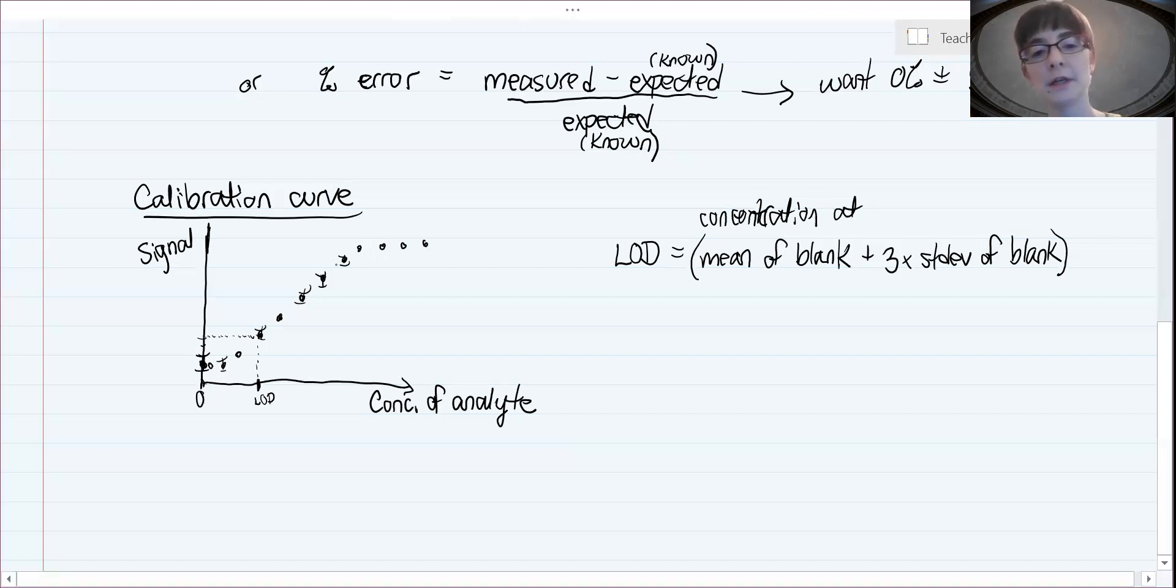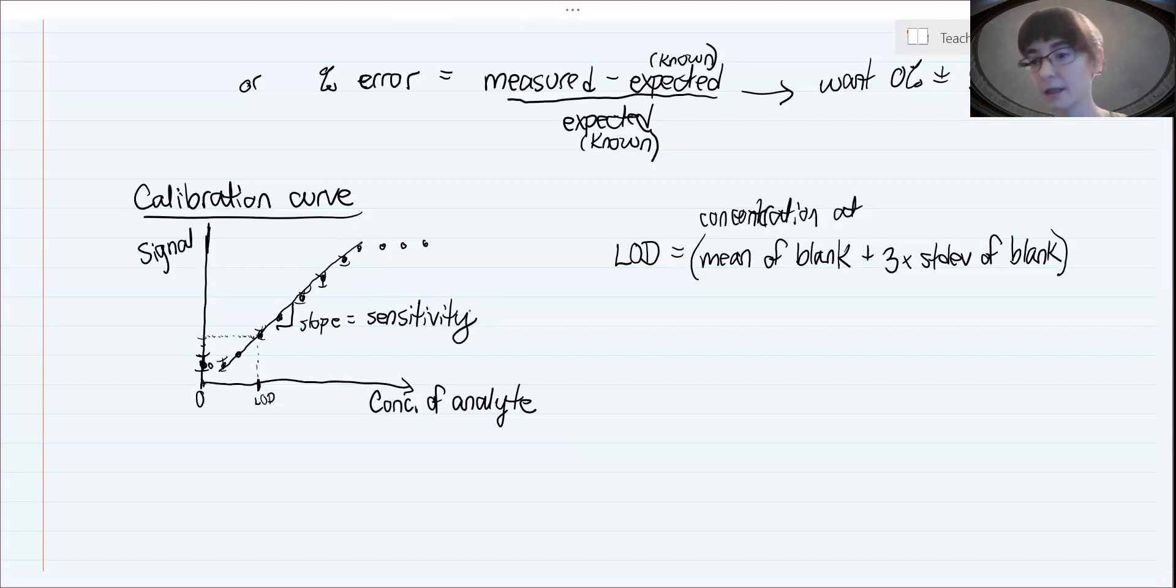Another one is what we call sensitivity, which is the slope of the linear fit of the linear part of the calibration curve. The slope we call sensitivity. That basically tells you how much change in signal do you get for every change in the concentration of analyte. You really want that to be steeper. If you have a higher sensitivity, a higher slope, it means you can really tell the difference between smaller concentrations of analyte, and so we would say an assay is highly sensitive.